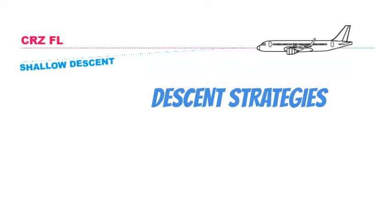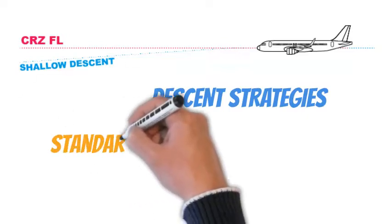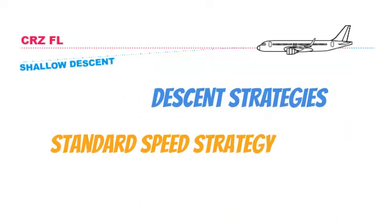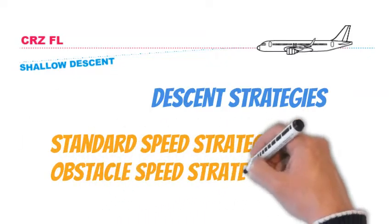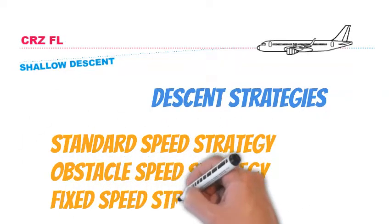Airbus has three descending strategies to stabilize the aeroplane and prepare for the next steps. Those are standard speed strategy, an obstacle speed strategy, and a fixed speed strategy.